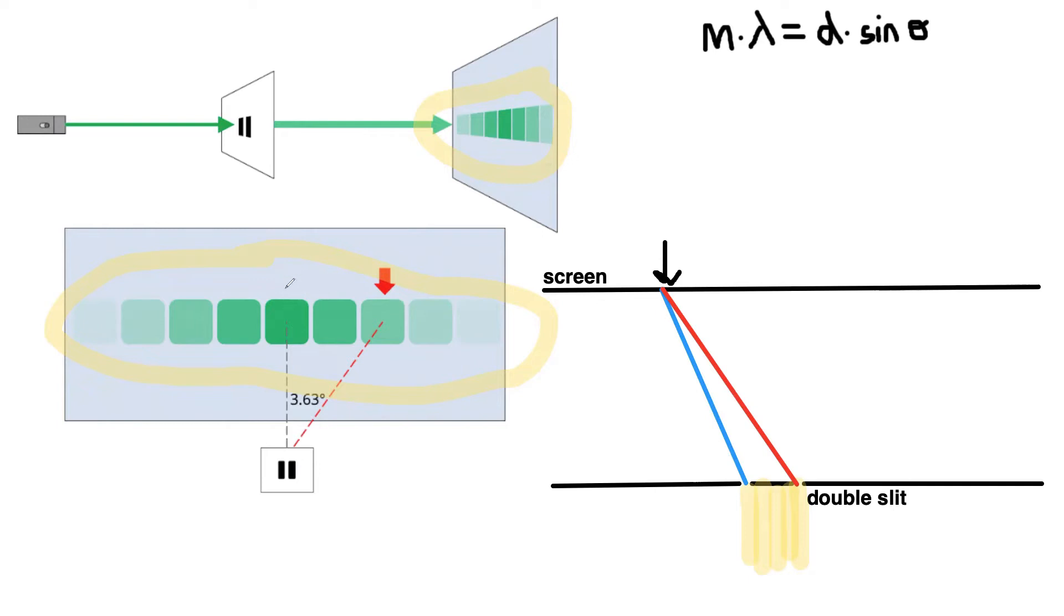So these maxima shown on the screen here, these bright bands, those happen when the two waves are in phase and we have constructive interference when they reach here. So that would be when our wave from the left slit and our wave from the right slit are in phase when they arrive.